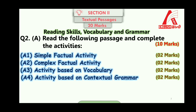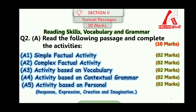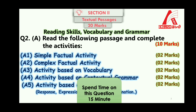A4 is an activity based on contextual grammar for 2 marks, testing your grammar skill with one or two grammar activities based on the passage. A5 is an activity based on personal response, expression, creation, and imagination for 2 marks — it may ask for your personal opinion or views on issues arising from the passage. You can give 15 minutes for this question.